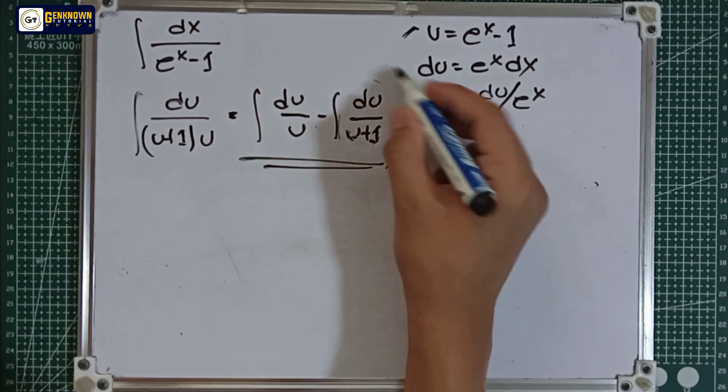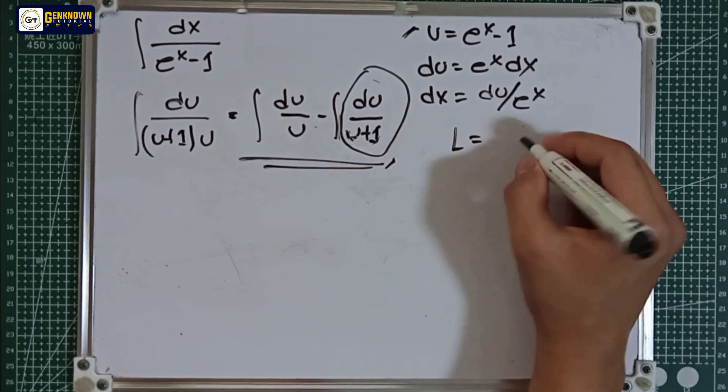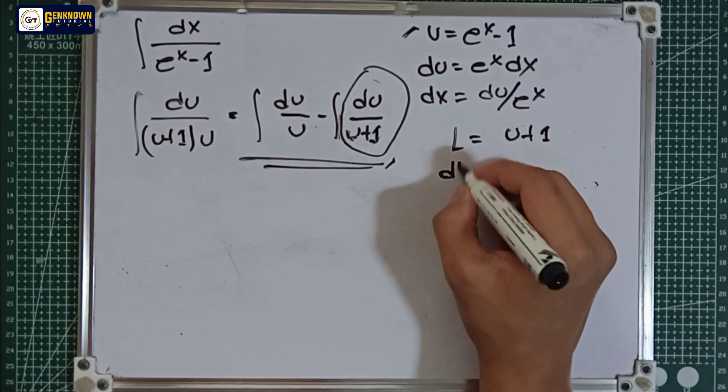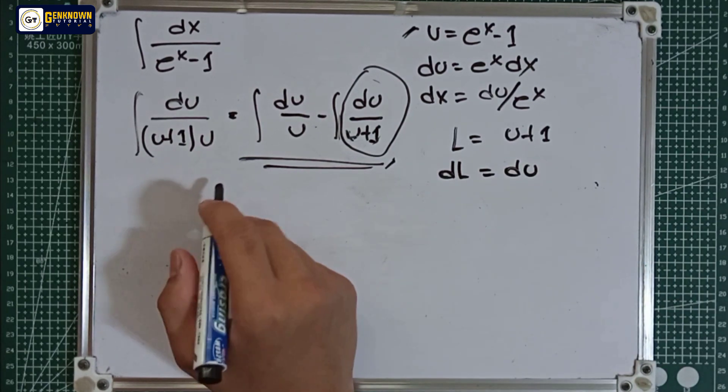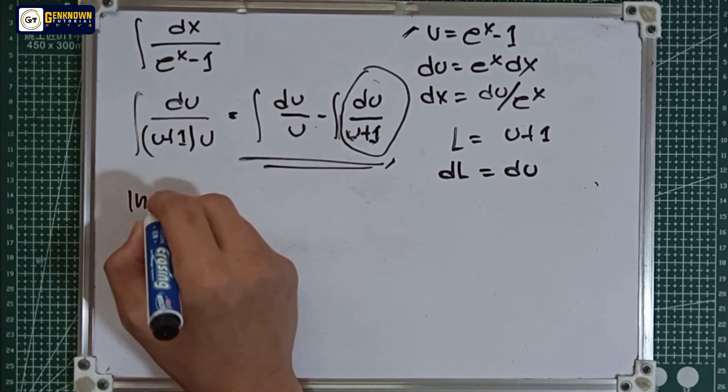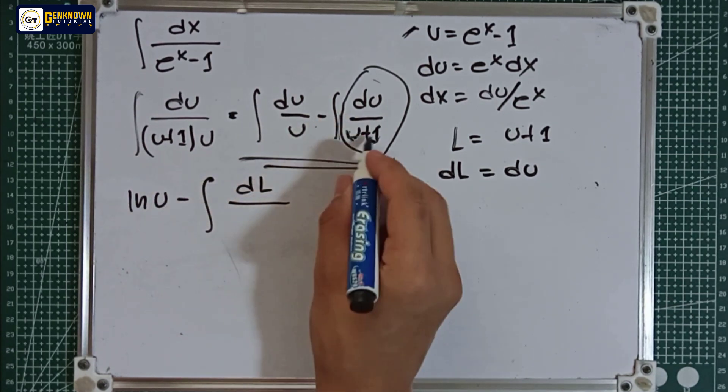So this part we will use substitution again. Let's say L is equal to u plus 1. So dL is equal to du. So we will have integral of du over u is ln u minus the integral of du is dL over u plus 1 is L.